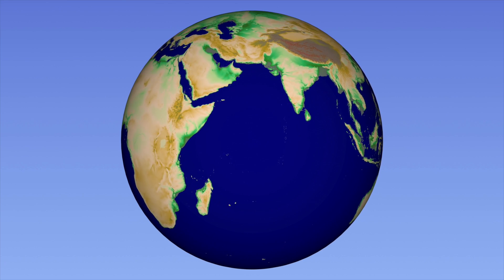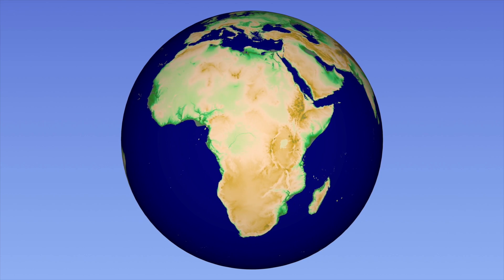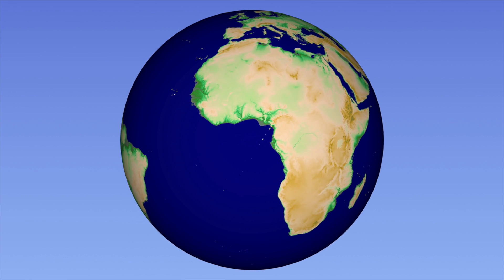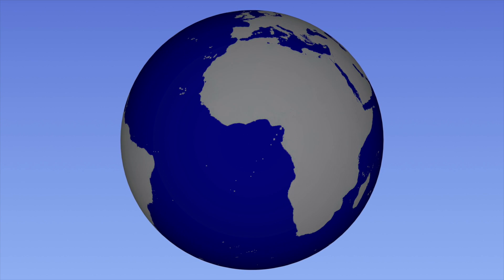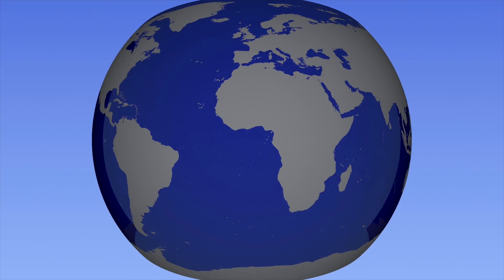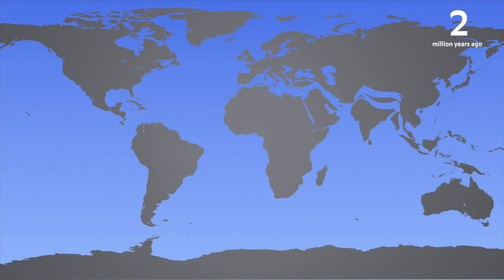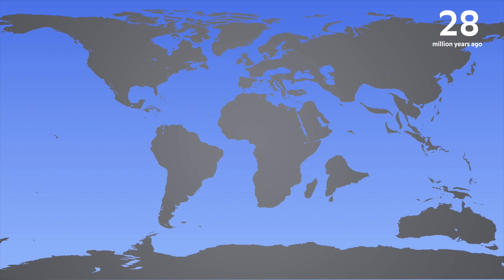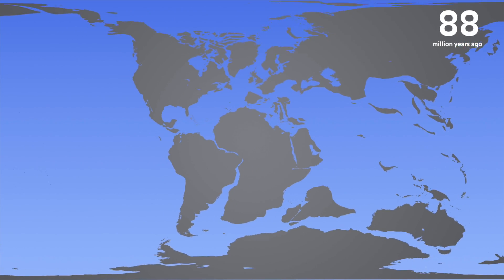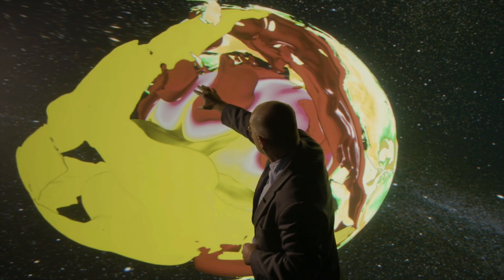Geology is very much concerned with the history of the Earth — why does the Earth look today the way it does? If I take plate tectonics as the example, the current positions of the continents and plates are a reflection of the motions that have happened on the surface of the Earth over time. But we've learned that that expression on the surface is really just a reflection of much larger processes in the interior of the Earth.